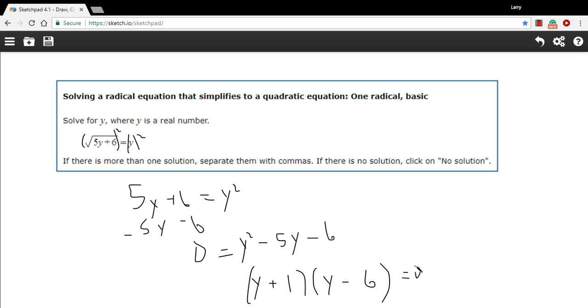We'll set both of those equal to 0. So y plus 1 equals 0 and y minus 6 equals 0. When we solve those, we get y equals negative 1 or y equals positive 6. So we've got two possible solutions here. We just need to check those in the original equation.